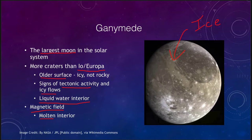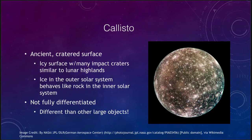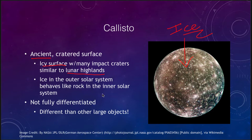The furthest out of the four is Callisto — the most distant of the Galilean satellites. It has a very ancient and cratered surface, so it looks a lot like our own moon, except once again this is all ice, not rock. It is an icy surface with a lot of impact craters, similar in many ways to the lunar highlands, with no maria where areas have been significantly flooded. We have to remember that in the outer solar system, ice behaves like rock does in the inner solar system.